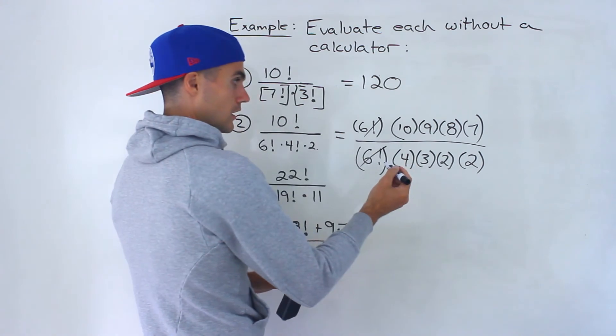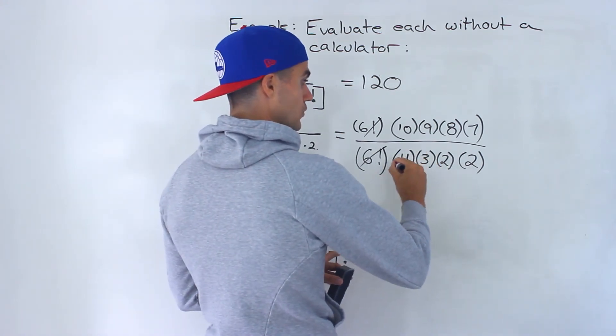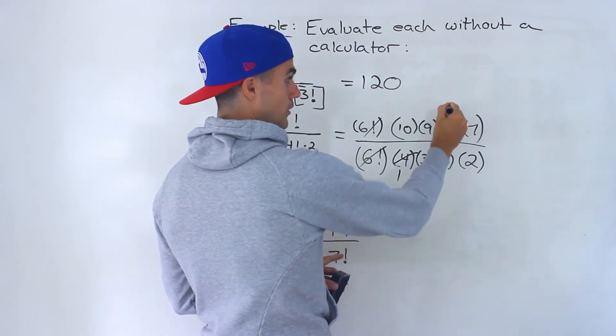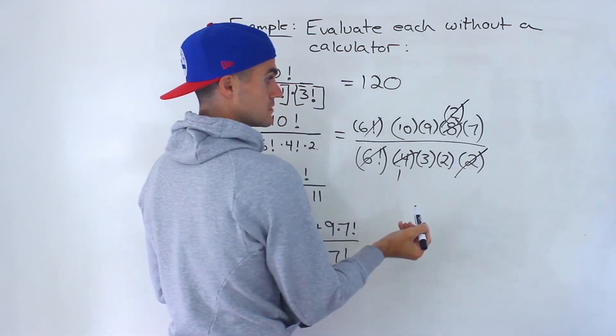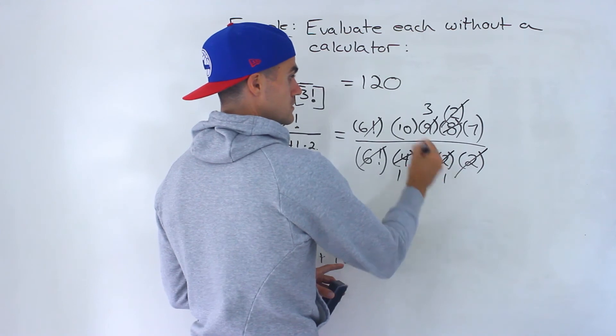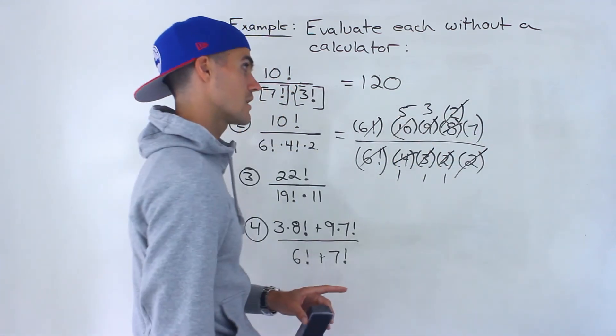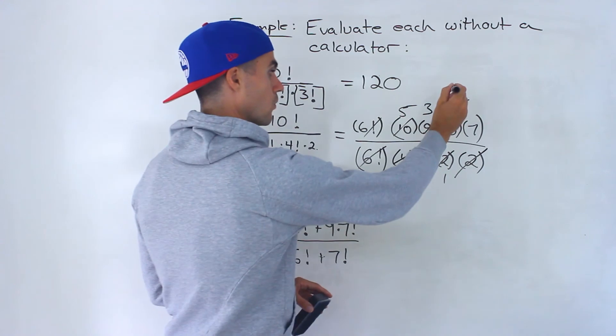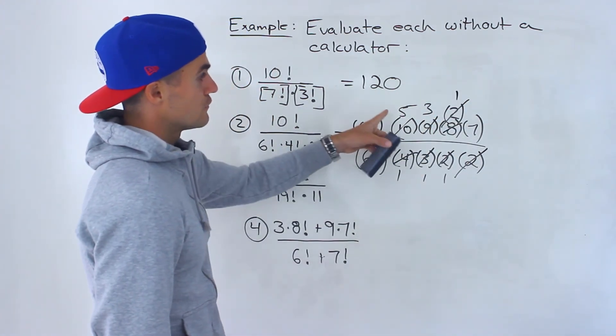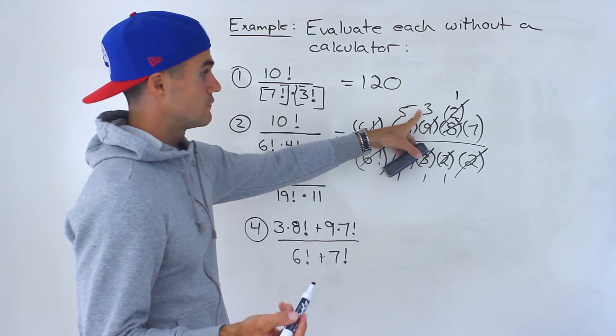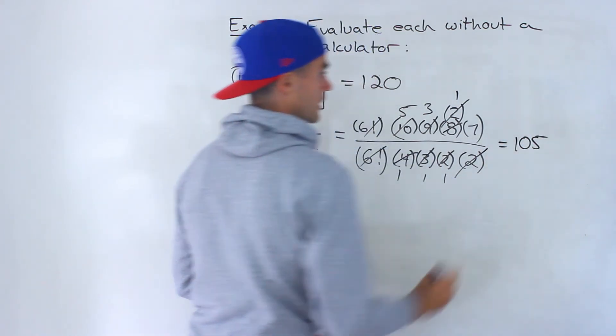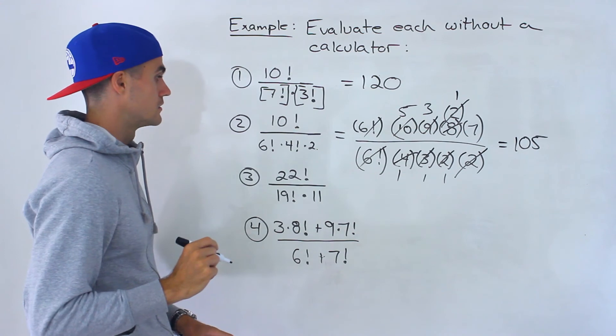From here, we can simplify again. Notice 4 goes into 8 twice. We're left with a 1 here. Notice that this 2 can cancel with one of these 2's. Notice 3 goes into 9, 3 times 2 goes into 10, 5 times. There's a 1 left here. So what would we have? 5 times 3, which is 15 times 7, which gives us 105. That's the answer to number 2.